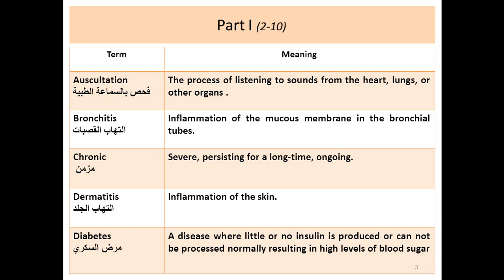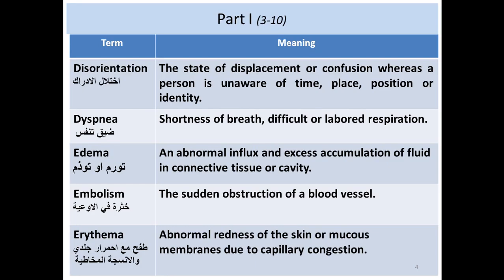Diabetes mellitus is a disease where little or no insulin is produced or can be processed normally, resulting in a high level of blood sugar. Disorientation is a state of confusion or displacement — confusion where the patient is unaware of time, place, position, and identity. We call it disoriented or a state of disorientation.